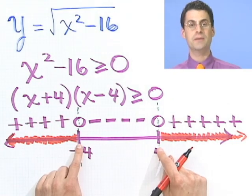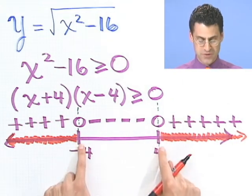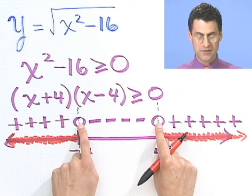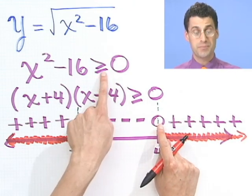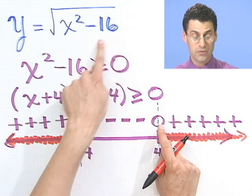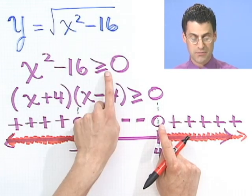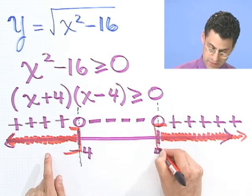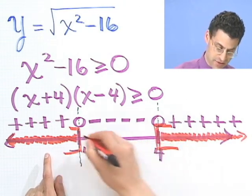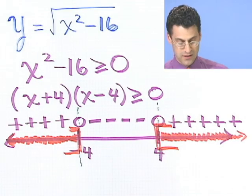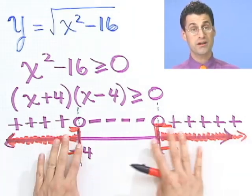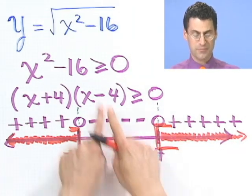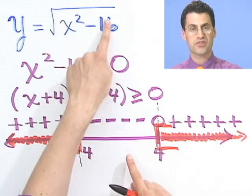Now, what about the endpoints? Do I want to include them or not? Well, those are places which make the thing 0. Am I allowed to equal 0? Yes, because I can have a square root with a 0 inside. That's OK. So I'm allowed to equal 0. So I'll include it here. And I'll include it here. So in fact, this is a visual answer. This is a graphical answer of the question. What's the domain? Any point in here. But notice, if I pick any point in here and plug it back in, that will make a negative under the square root, which is not allowed.